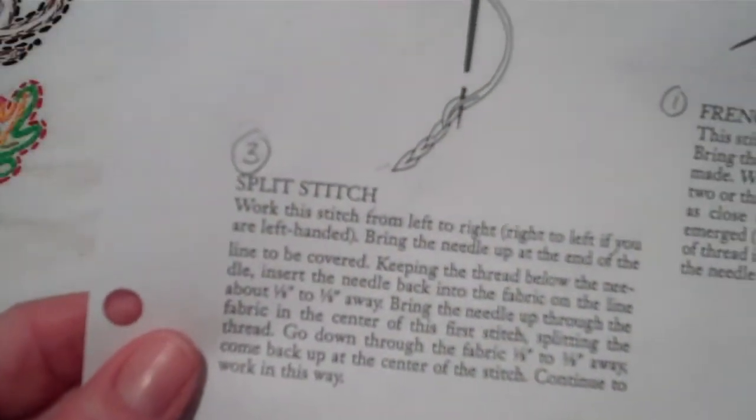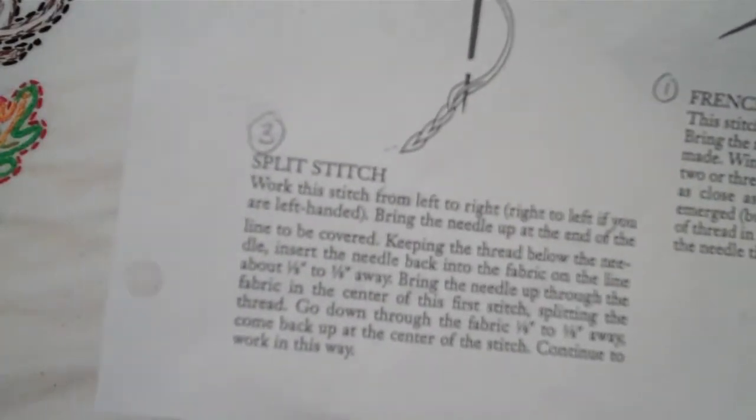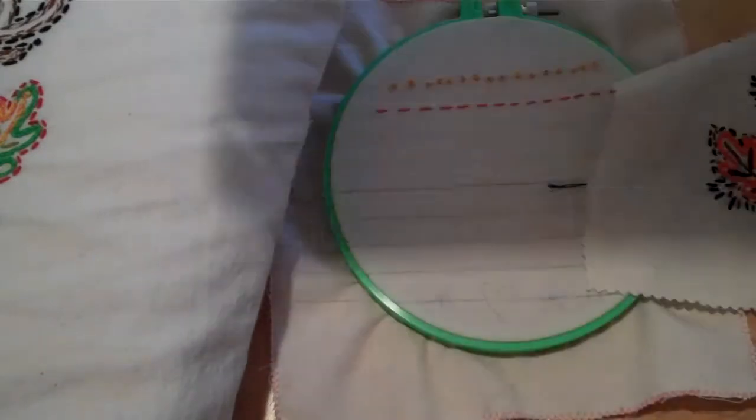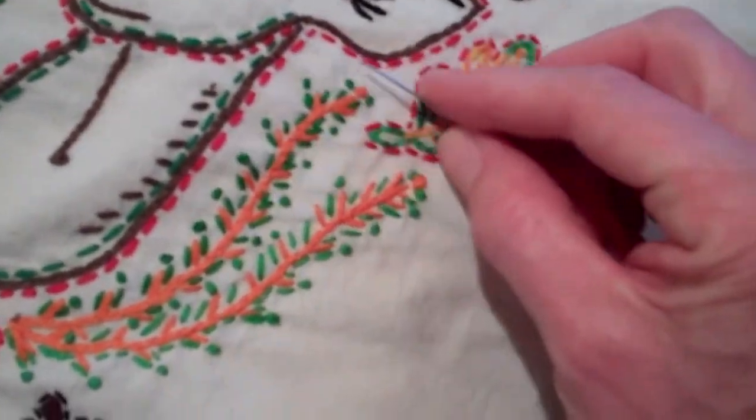Stitch number three is called the split stitch. This is the main stitch that you will be using. It creates a solid line so that you can outline the image that you're working on. It's a solid line. It covers everything up. It's easy to use.